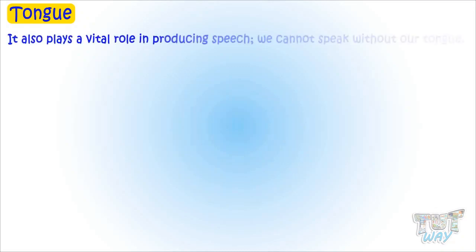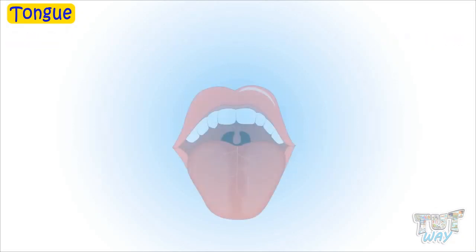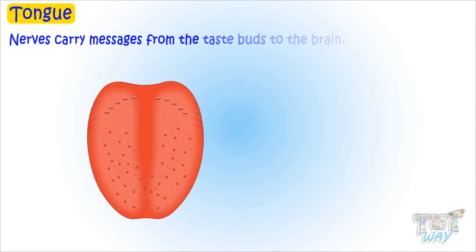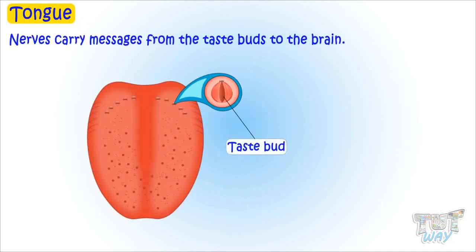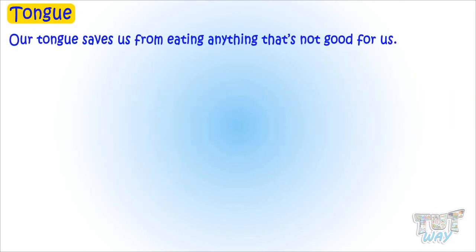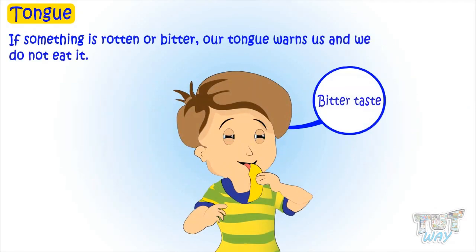The tongue also plays a vital role in producing speech. We cannot speak without our tongue. Our tongue is richly supplied with nerves and blood vessels. Nerves carry the messages from the taste buds to the brain. Our tongue saves us from eating anything that's not good for us, like if something is rotten or bitter — our tongue warns us and we do not eat it.